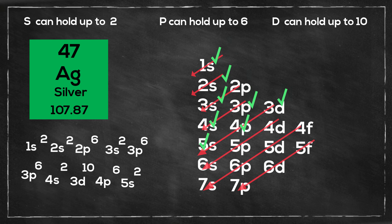And then normally you would have 5s2 and then a 4d9. But instead it is very similar to copper. You have a 5s1 and then 1 electron moves to the d orbital, then you have 4d10.